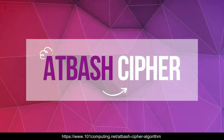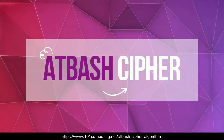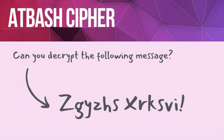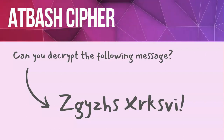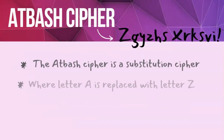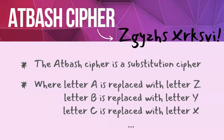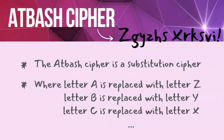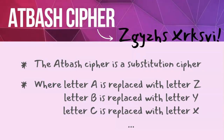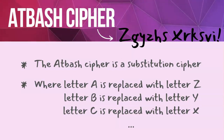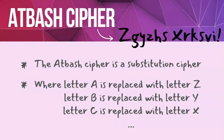The Atbash cipher is a substitution cipher, which means that when you want to decrypt a message, you have to replace every letter with another letter of the alphabet. With the Atbash cipher it's fairly easy. Letter A is always replaced with letter Z. Letter B, the second letter in the alphabet, is replaced with the penultimate letter, Y. Letter C is X, and so on.